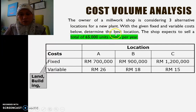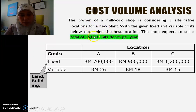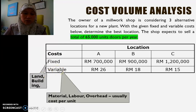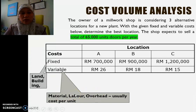So these are the questions. The question says that a mail workshop making doors is planning for a new plant. The forecast demand for next year is going to be 65,000 units, and they have three locations under consideration. They gave us information on fixed costs — for land, building, and structure — and variable costs, which include material, labour, and overhead costs for making one unit.